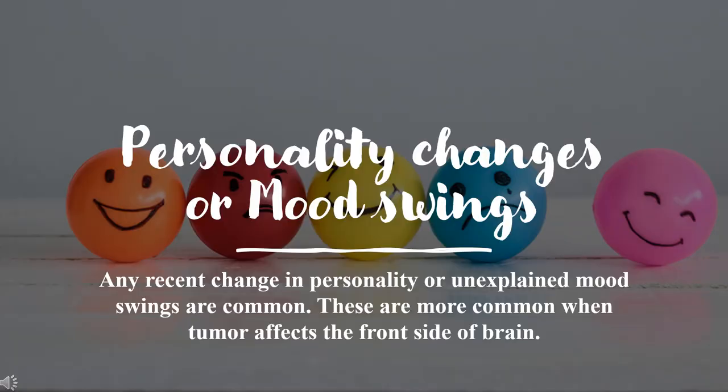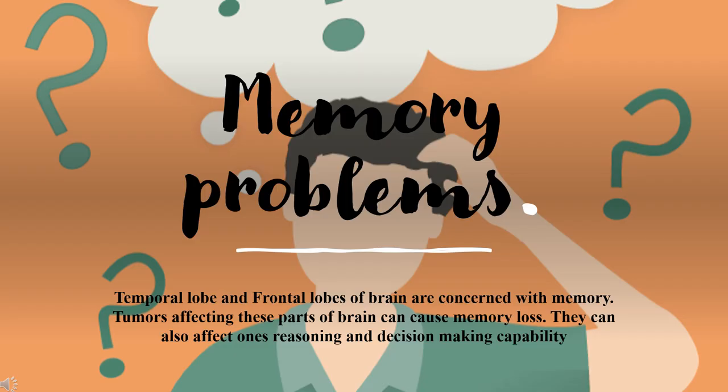Personality changes or mood swings. Any recent change in personality or unexplained mood swings are common, and are more frequent when the tumor affects the front side of the brain. Memory problems. The temporal lobe and frontal lobes of the brain are concerned with memory. Tumors affecting these parts can cause memory loss and affect one's reasoning and decision-making capability.